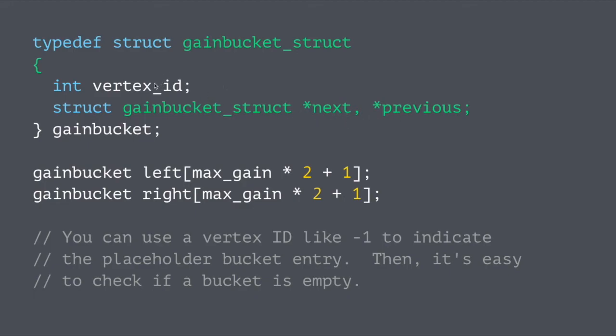And so we're going to have a bucket for each possible gain, and doubly linked list to insert and delete, and then on the left-hand side, we're actually going to have an array of these gain bucket structures. The maximum gain is the maximum cardinality of any vertex, because we're going to have maximum gain plus or minus whatever the cardinality is, multiply that by 2.